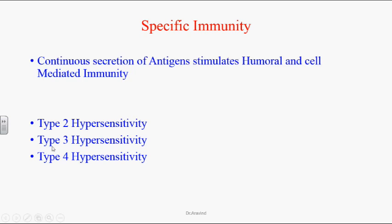The second is type 3 hypersensitivity reaction, seen in Streptococcus pyogenes glomerulonephritis. In this condition, antibodies produced against the antigens cross-react, and the antigen-antibody complexes are deposited on the basement membrane of the glomerulus, causing glomerulonephritis — tissue damage occurring because of our own immune activity.